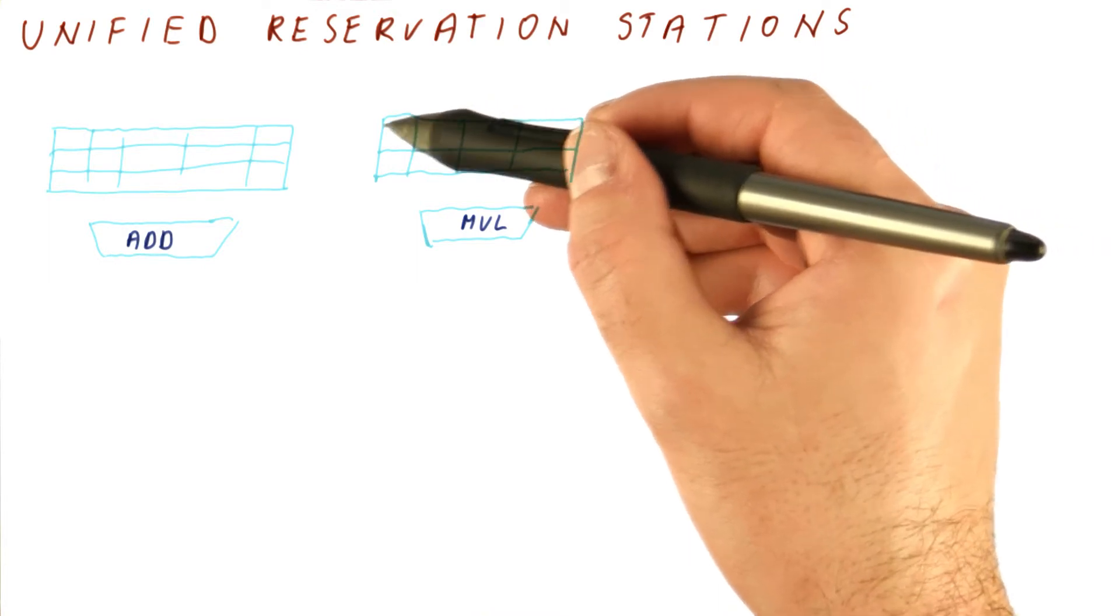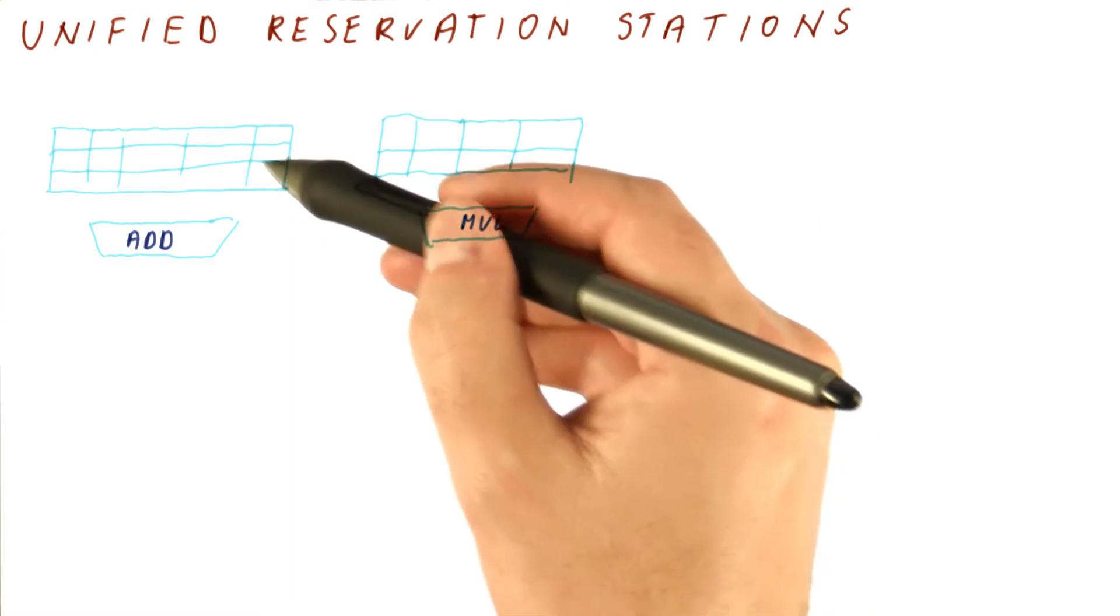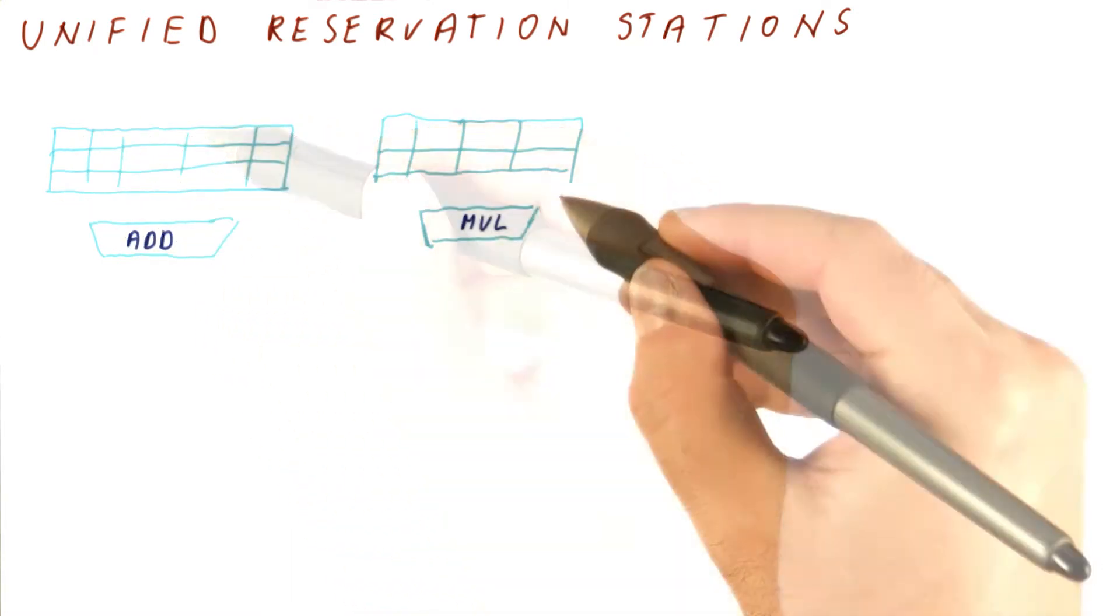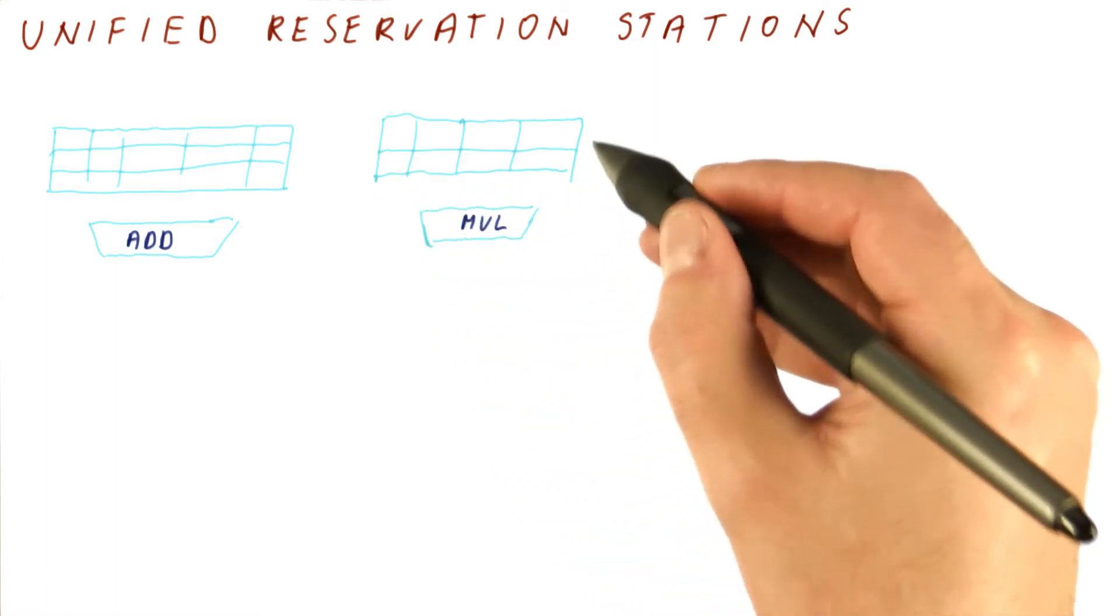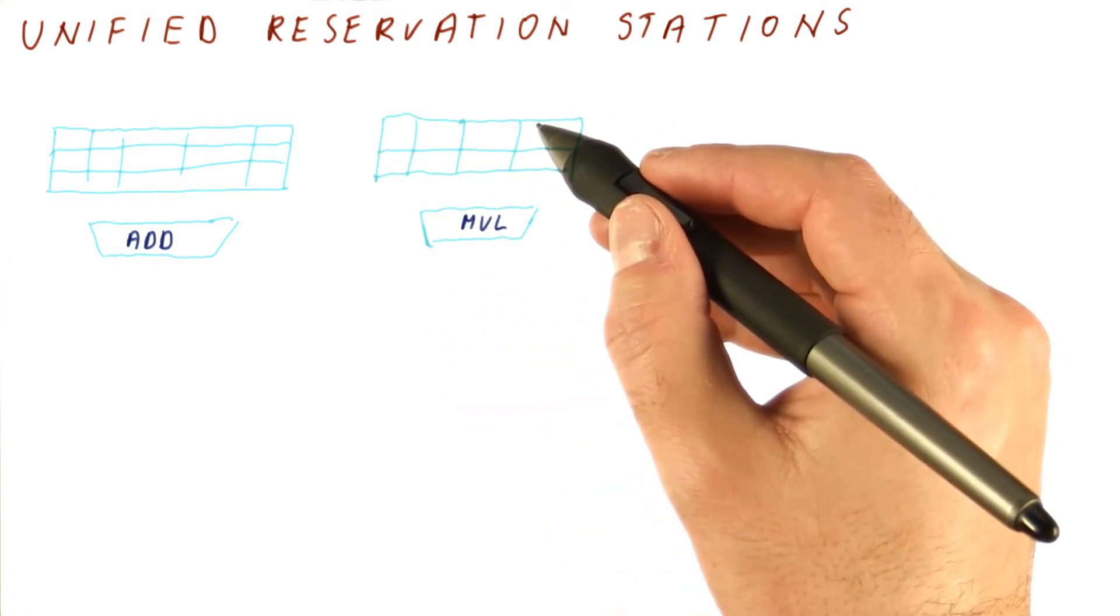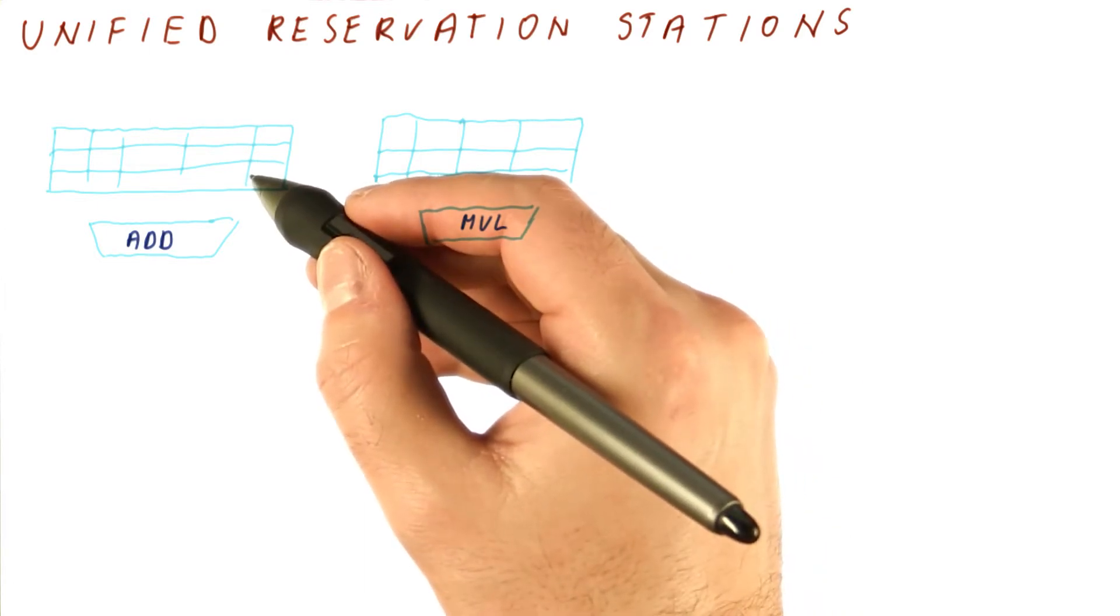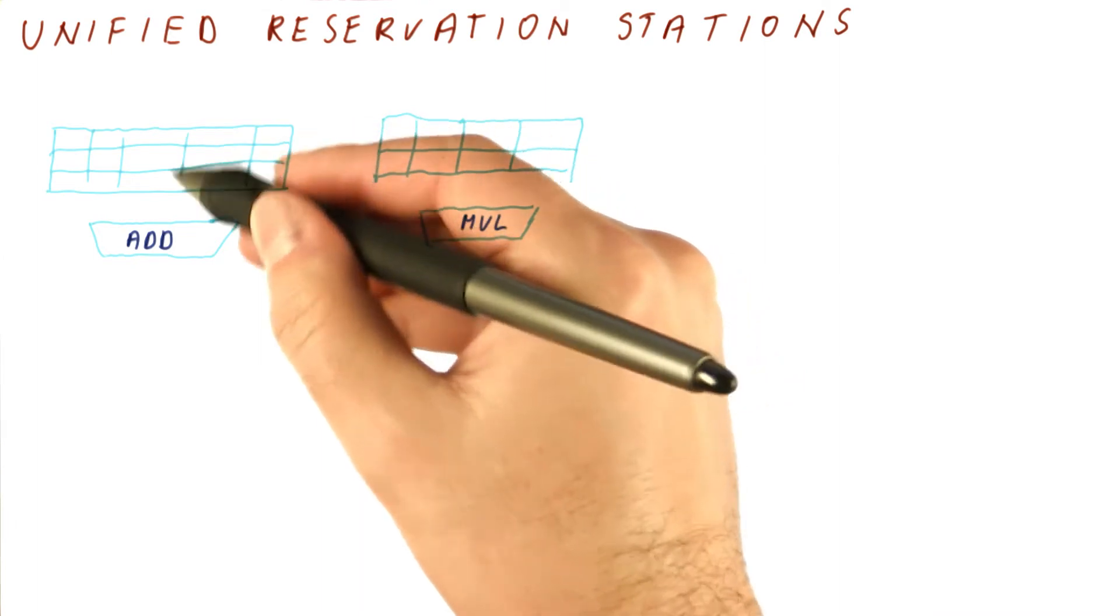And we have seen in at least one of our examples that we can run out of these reservation stations while we still have plenty of these left. However, we still couldn't issue instructions. Basically, once we cannot issue an instruction because it needs one of these reservation stations, because issue needs to happen in order, we cannot issue any of these either. So until these reservation stations become available, we cannot really use the available ones here.